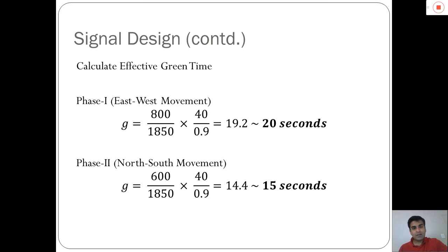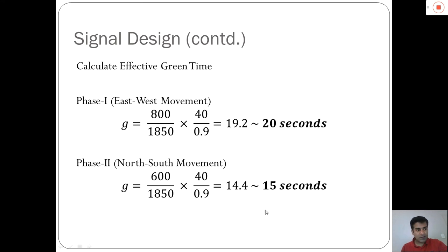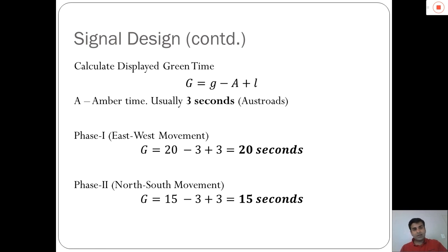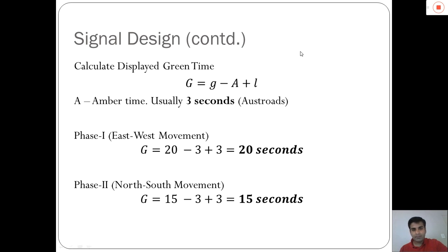The next step is to calculate the effective green time, which is the duration of the green signal during which actual movement of vehicles takes place. Using the formula, the effective green time for phase one and phase two are 20 seconds and 15 seconds respectively. The displayed green time is the total duration for which the green signal is actually turned on, given by effective green time minus amber time (3 seconds per Ausroads) plus the start loss time. The displayed green time for phase one and phase two is 20 seconds and 15 seconds respectively.